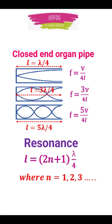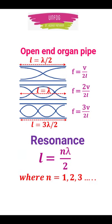And in open end pipe, all integral multiples of first harmonic are allowed, so resonance occurs at l equals n into lambda by 2, where n equals 1, 2, 3, and so on.